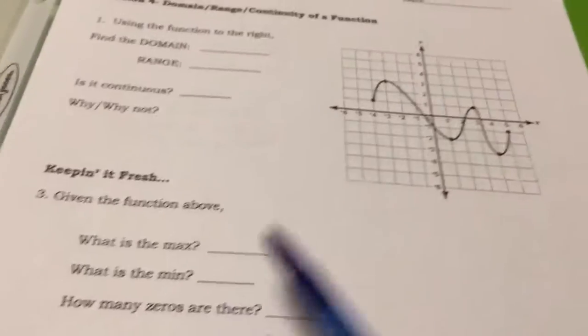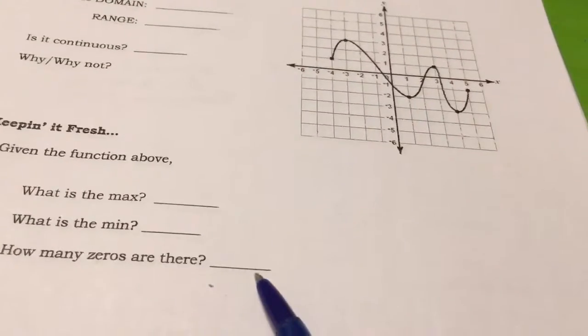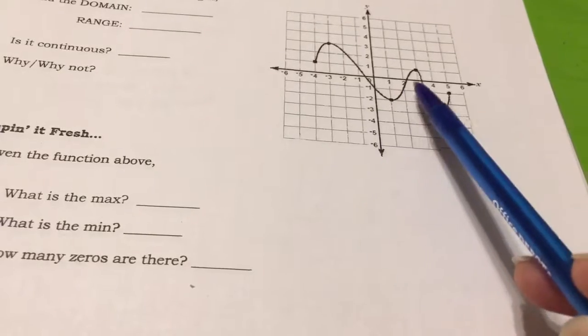Where is your lowest point? Your lowest point is down here. And how many zeros? How many times does it cross the x-axis?